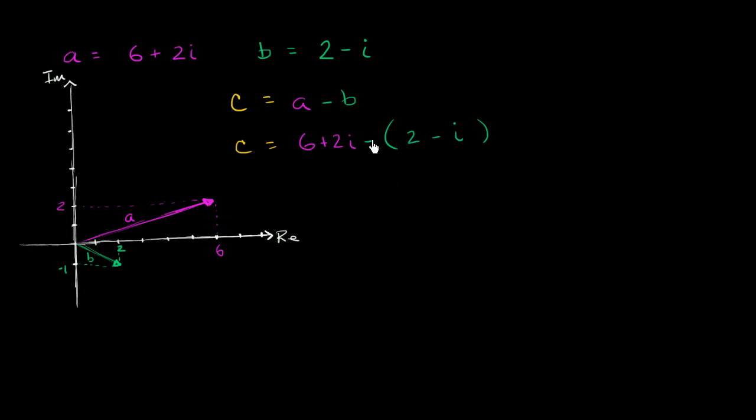So when we're subtracting anything, we can distribute this negative sign. This would be equivalent to six plus two i minus two. And then distributing the negative on a negative i, that's going to be a positive i. Plus i, just like that.